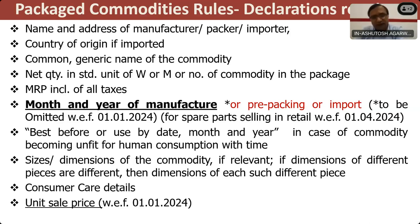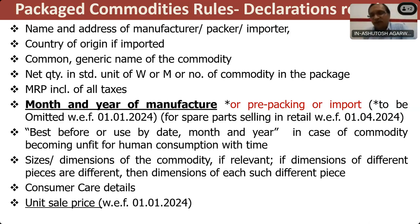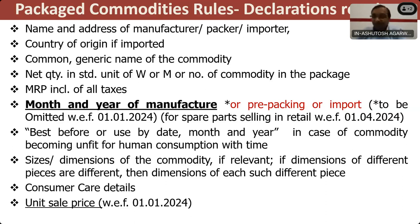Unit sale price — the consumer should know the unit sale price of a prepackaged commodity. As already discussed, it will be in terms of per gram for quantities up to 1 kg, and per kg for quantities above 1 kg.